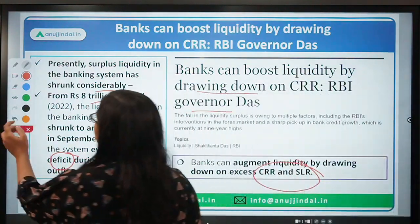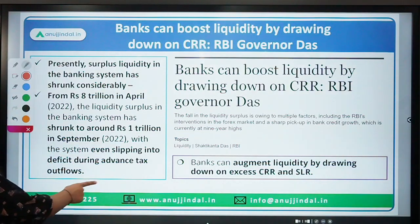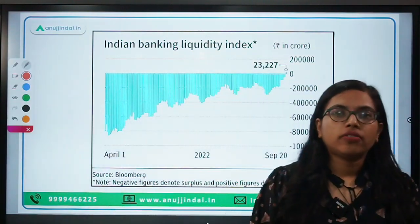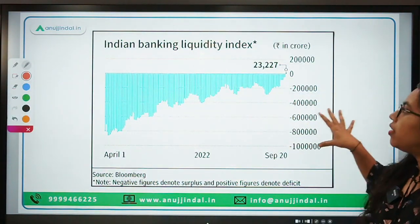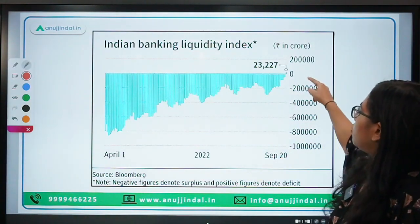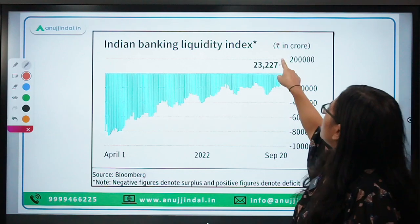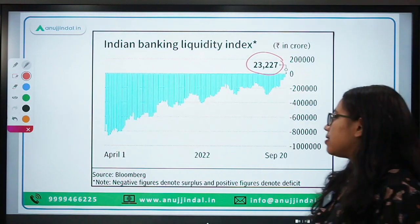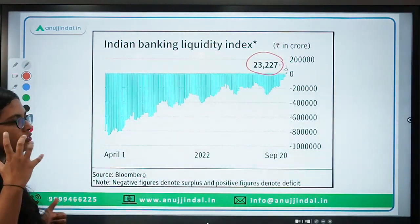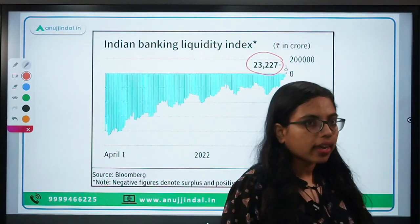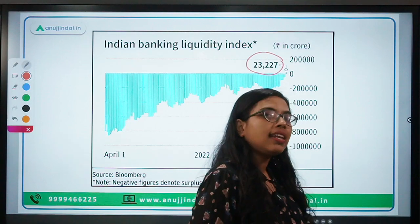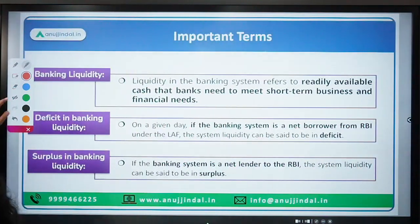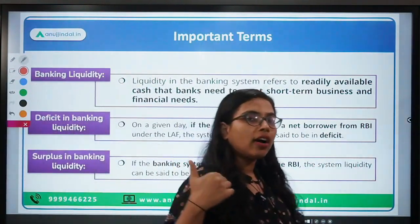Now let's move forward and talk about what banking liquidity is in terms of numbers. Looking at the graph, as of April we had around 8 lakh crores, and as of September 20, there is just 23,227 crore liquidity left in the banking system. There will be a question in your mind — what is the actual definition of banking liquidity, and what is surplus liquidity and deficit liquidity? We have to understand some concepts and technical definitions.